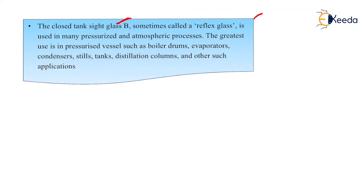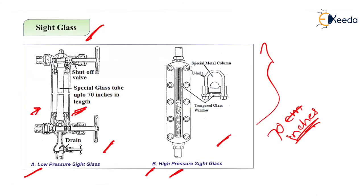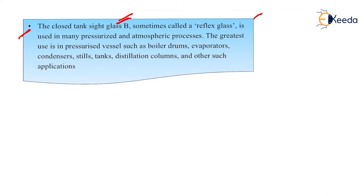Side glass B is used for high-pressure closed tanks and has a special metal column with a tempered glass window, not present in type A. This closed-tank side glass B is sometimes called a reflex glass. It is used in many pressurized and atmospheric processes, with greatest use in pressurized vessels such as boiler drums, evaporators, condensers, stills, tanks, distillation columns, and other such applications.